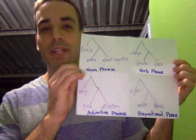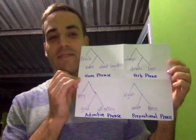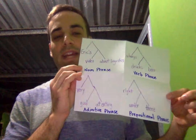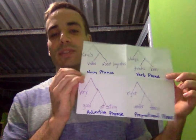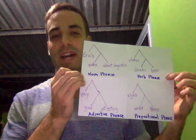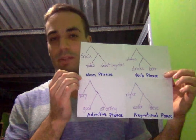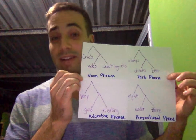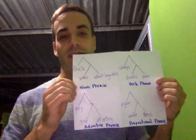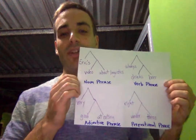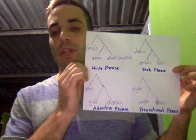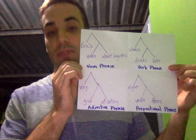Always drinks beer is a verb phrase, and right under there is a prepositional phrase. Can you see how the diagram for each type of phrase follows the same pattern? The key word of all phrases — in English, the word in the center of these diagrams — is what determines the properties of that phrase.